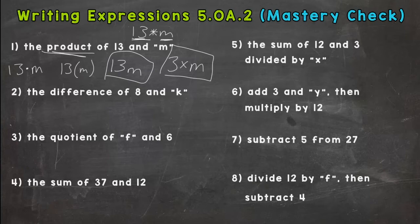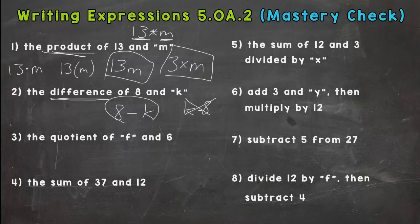The difference of 8 and K. So our keyword here, difference, we should have 8 minus K. K minus 8 would not be correct. Remember, subtraction is not commutative. Order matters, so it has to be 8 minus K.